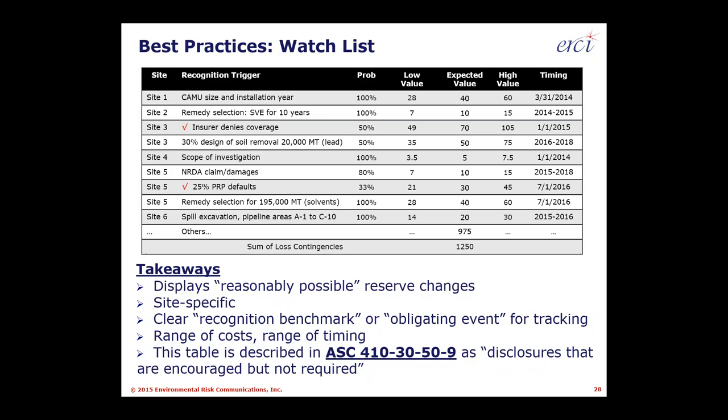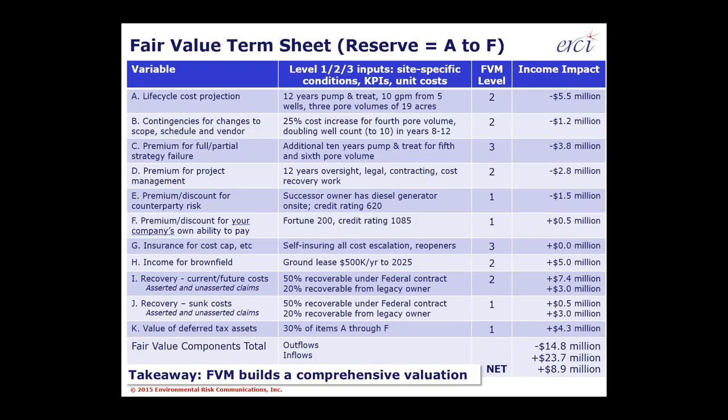The outputs you're generating when you value a site-specific liability include a site-specific recognition trigger, a site-specific probability of a reserve increase, and a site-specific low, mid, and high timing variable. Generally, Excel is the tool of choice, but the thinking that goes behind it is key. The documentation and audit trail you generate often becomes a reserve basis used going forward. These calculations demonstrate reasonably possible reserve changes and recognition benchmarks that are auditable — actually described in GAAP as a disclosure that's encouraged but not required today.